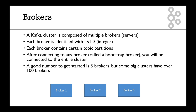Now we're getting into the really interesting stuff: brokers. A Kafka cluster is composed of multiple servers, and these servers are called brokers because they serve and receive data. Each broker can be identified with its ID, which is an integer — so one, two, three, and so on.